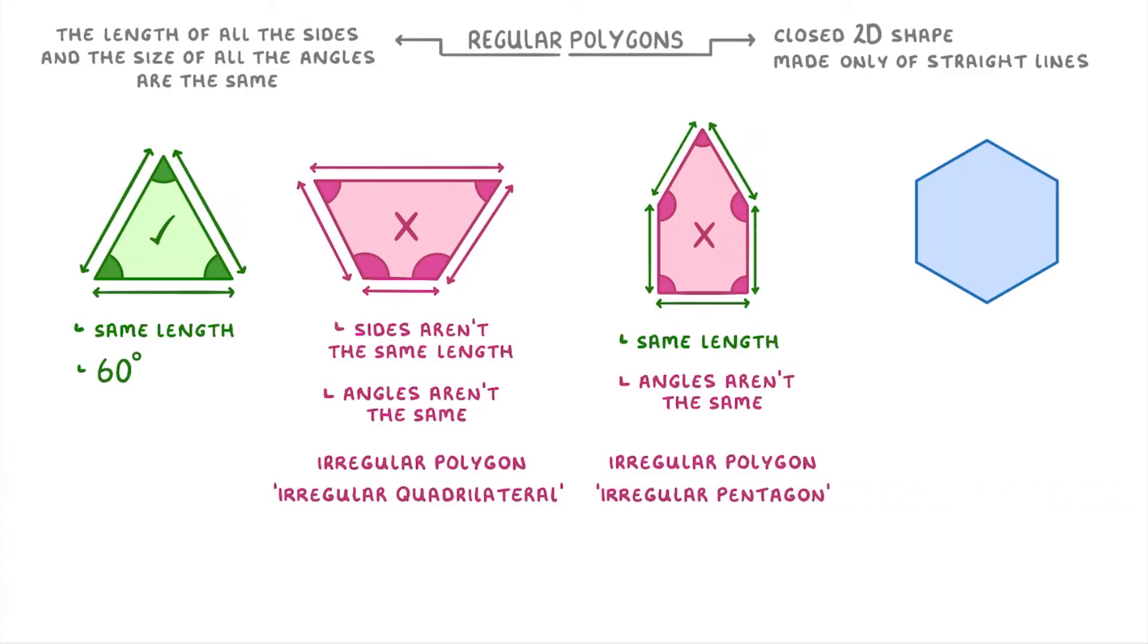And lastly, the shape on the right would count as a regular polygon because its six sides are all the same length and its six angles are all the same size. And because its six sides make it a hexagon, as well as a regular polygon, we could call it a regular hexagon.